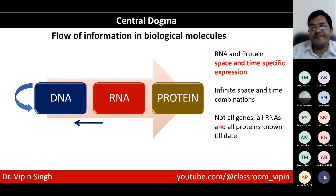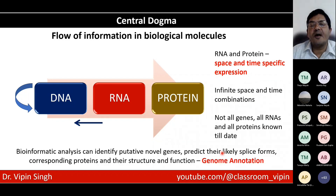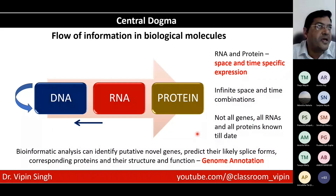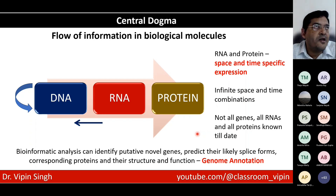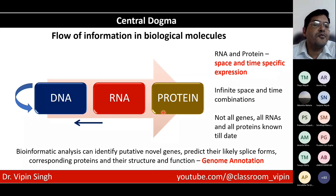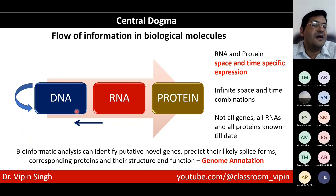Not all genes, all RNAs, and all proteins are known till date. There again you have genome annotation, where using bioinformatics we want to predict how many possible genes there are — because we know the basic structure of a gene, and that can be used to reasonably say that a certain region, while the corresponding protein or RNA has not been identified in wet lab, is likely to code for a protein. And now, of course, we're moving into what is known as the omics revolution. Omics essentially means that we're using the entire DNA as a reference — not just one gene or two genes, but also everything else.